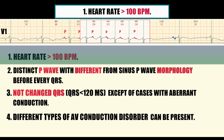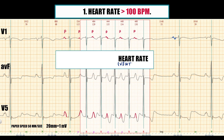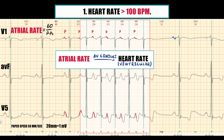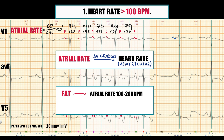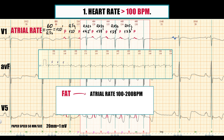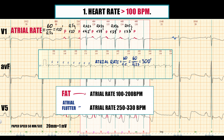The first criterion is heart rate more than 100 bpm. Heart rate, or ventricular rate in atrial tachycardia, depends on atrial rate and AV conduction. To evaluate atrial rate, measure the PP interval in seconds, then divide 60 by the PP interval — just like heart rate calculation but using PP instead of RR intervals. In atrial tachycardia, atrial rate is between 100 and 200 bpm. If the atrial rate is greater than 250 bpm, it suggests atrial flutter. So atrial rate can help distinguish focal atrial tachycardia from atrial flutter.